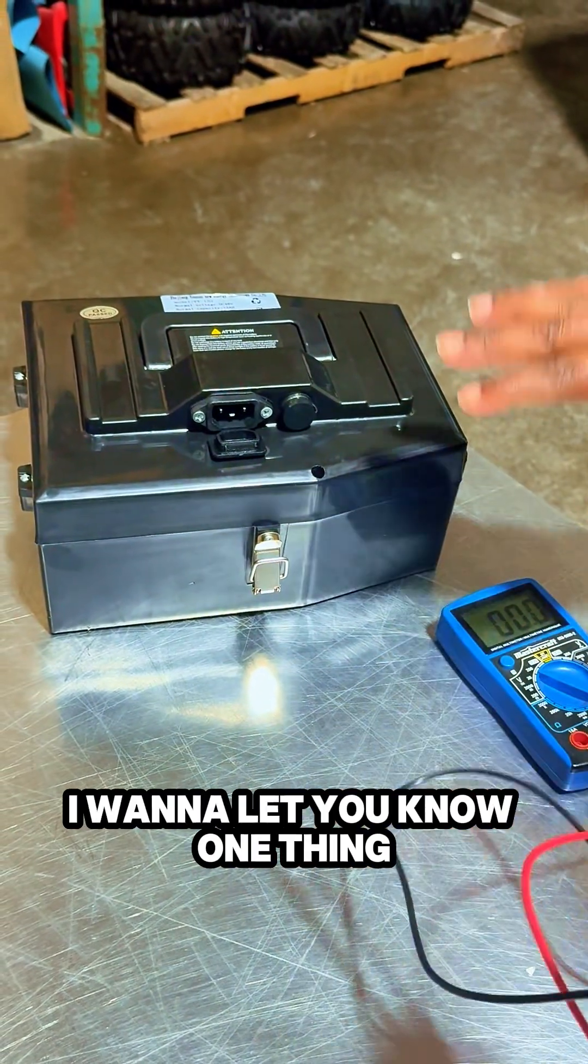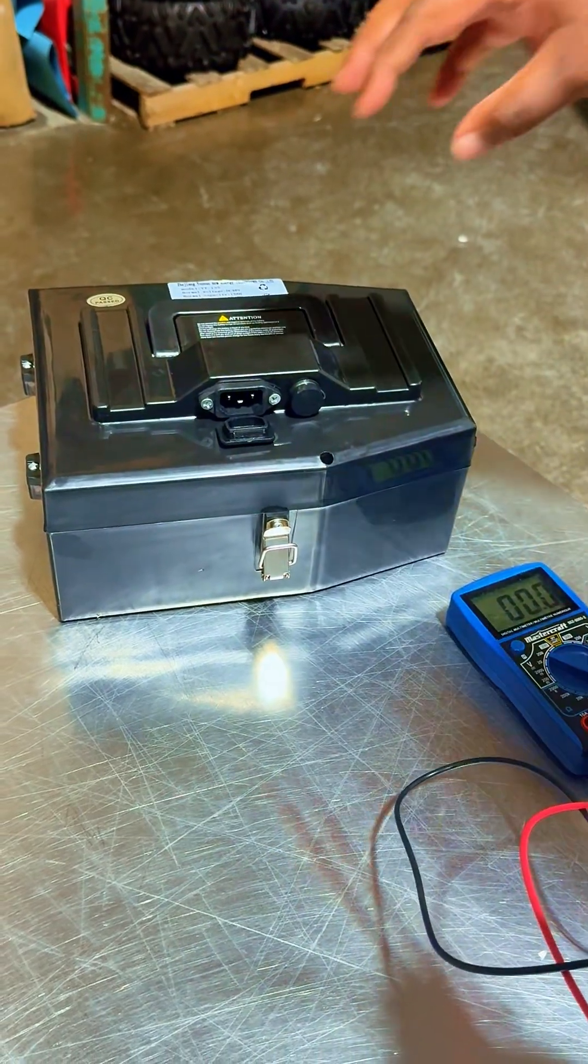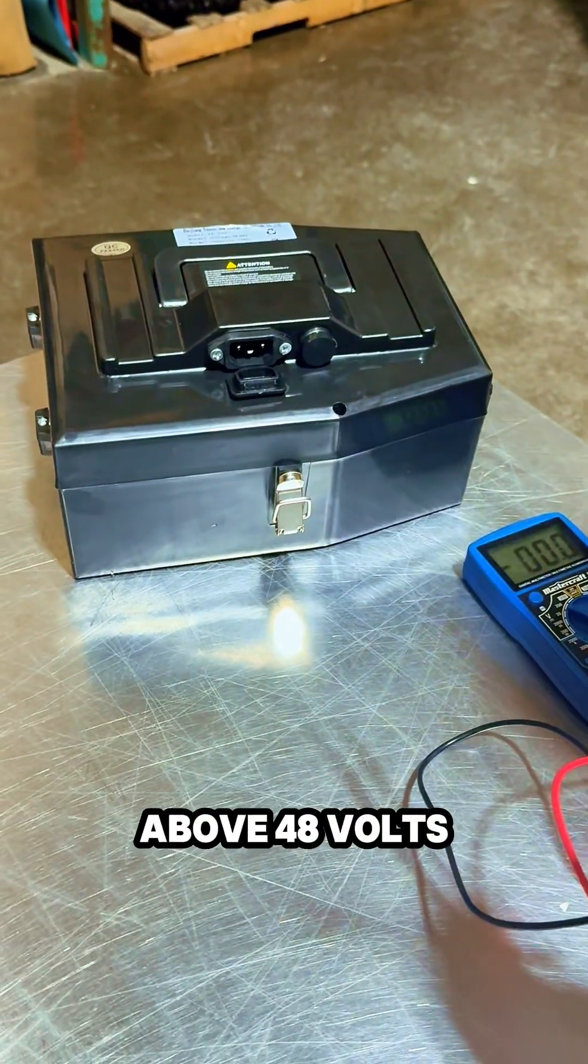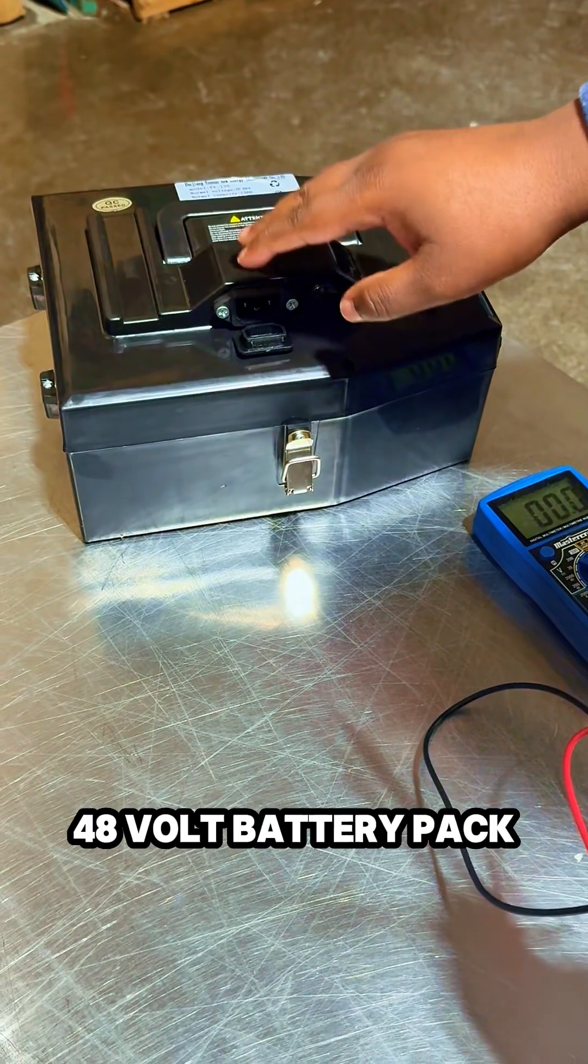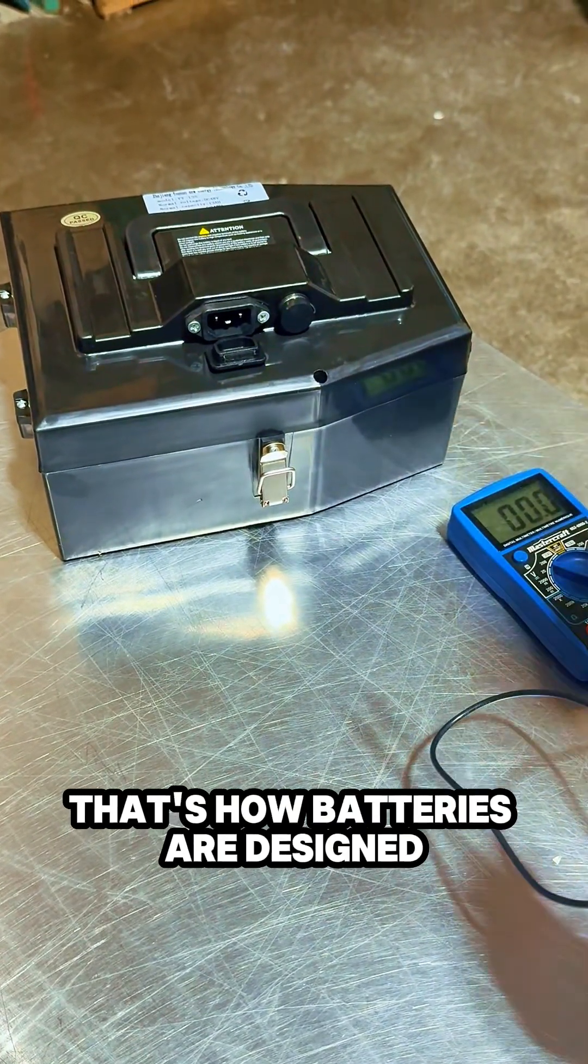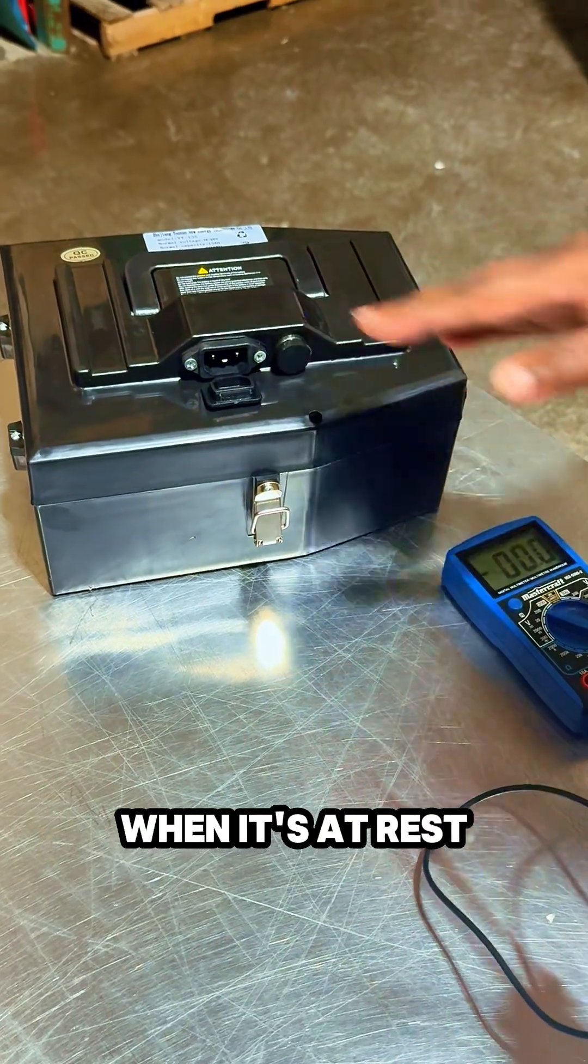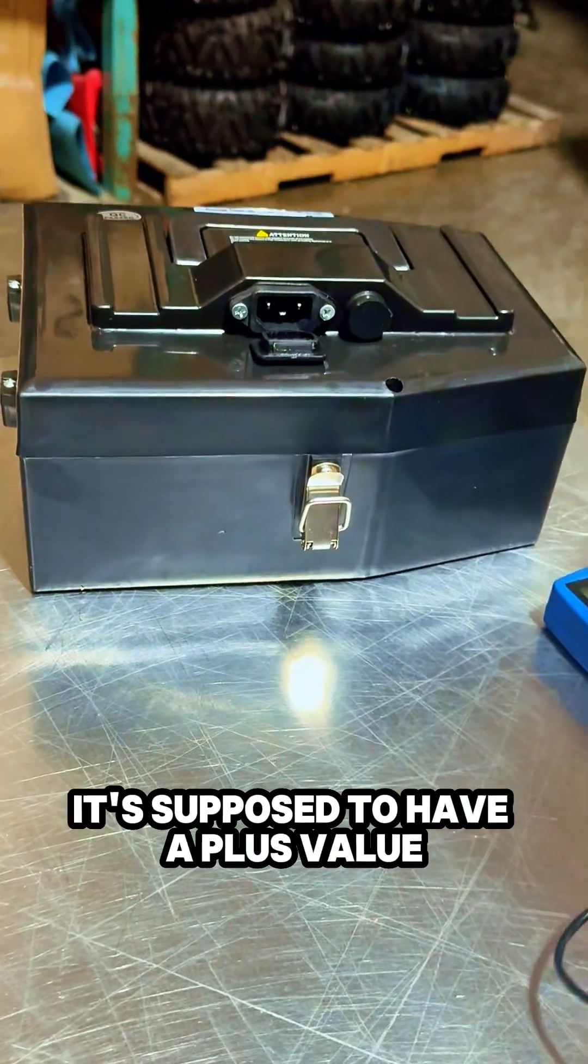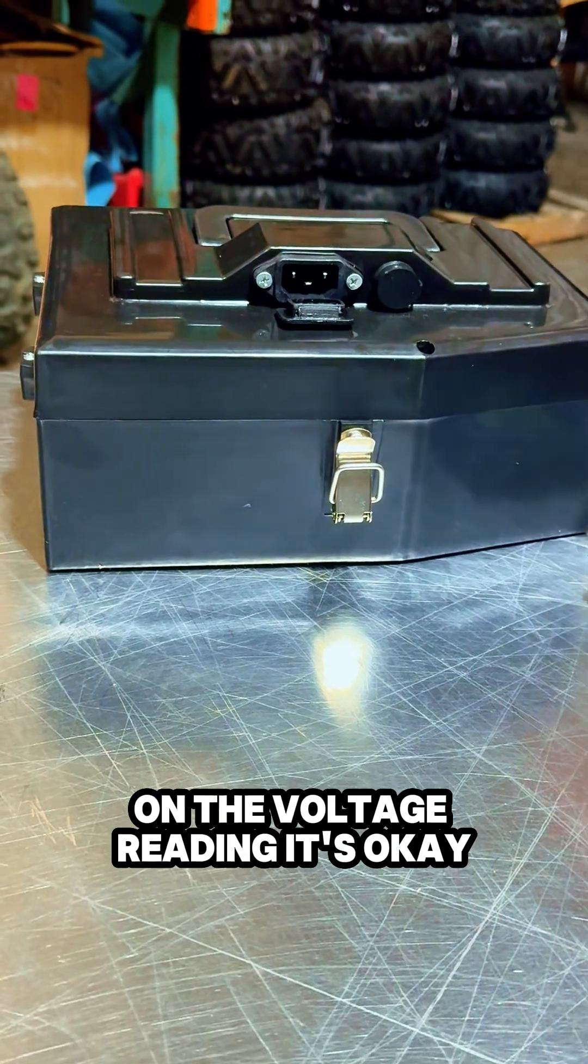I want to let you know one thing before I do this. It's okay for this reading to be above 48 volts, even though this is a 48 volt battery pack. You actually want a plus value on your battery pack. That's how batteries are designed when at rest. It's supposed to have a plus value on the voltage reading.